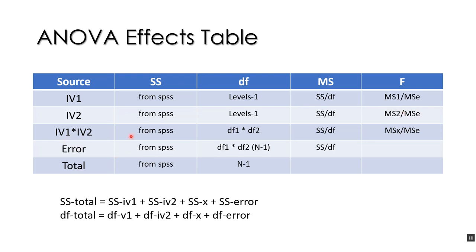For the interaction, the sum of squares comes from SPSS. The degrees of freedom for the interaction are the degrees of freedom for factor 1 multiplied by the degrees of freedom for factor 2 — in this case, 1 times 1 equals 1. Sum of squares divided by 1 gives us the mean square interaction, which we then divide by the error term.